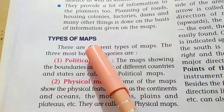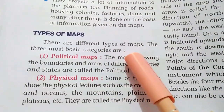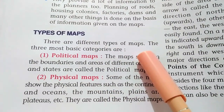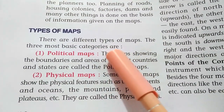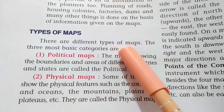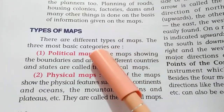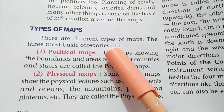Types of maps. There are different types of maps. The three most basic categories are as follows.